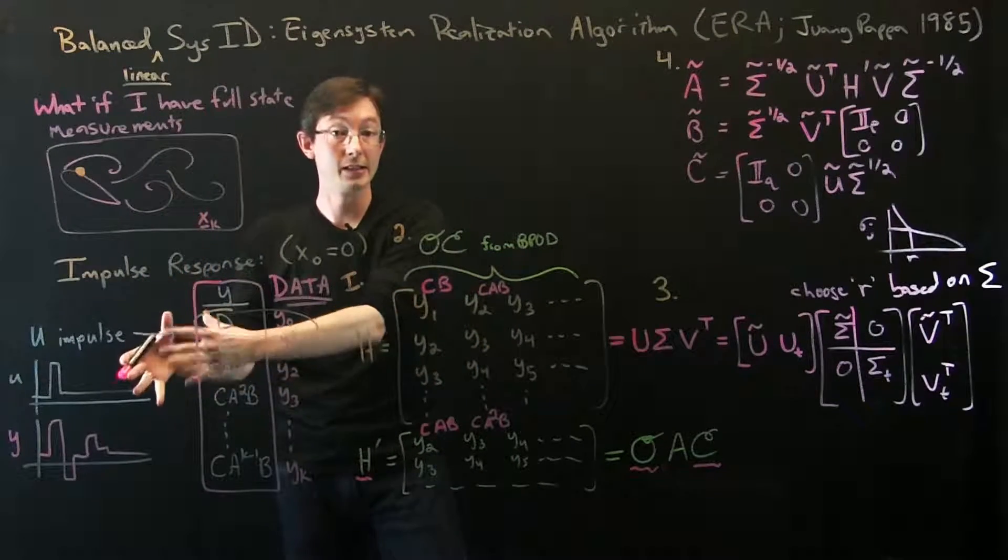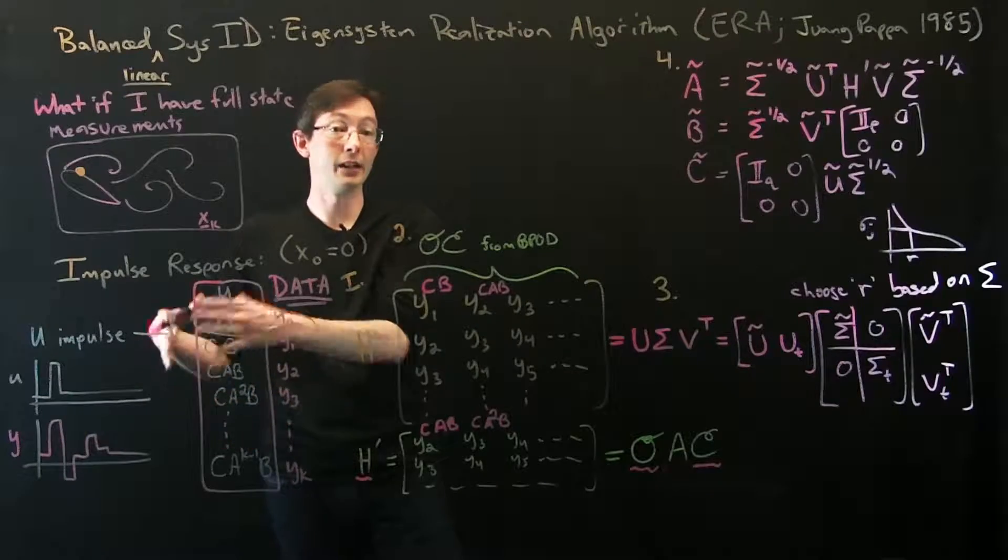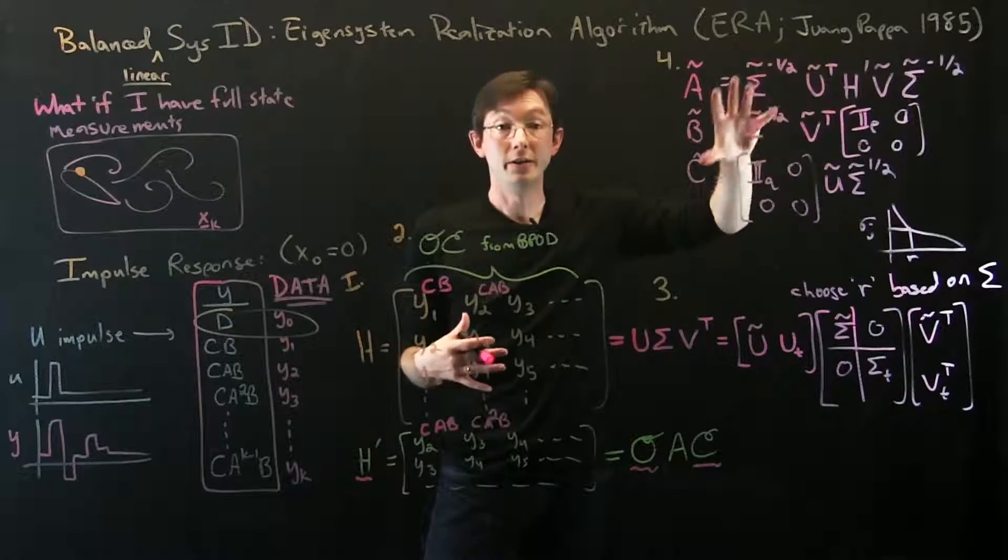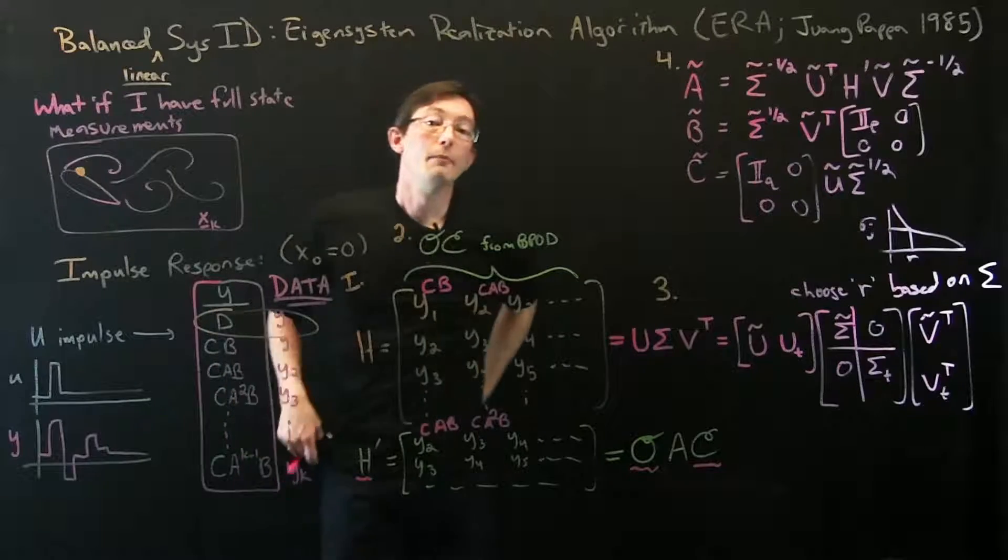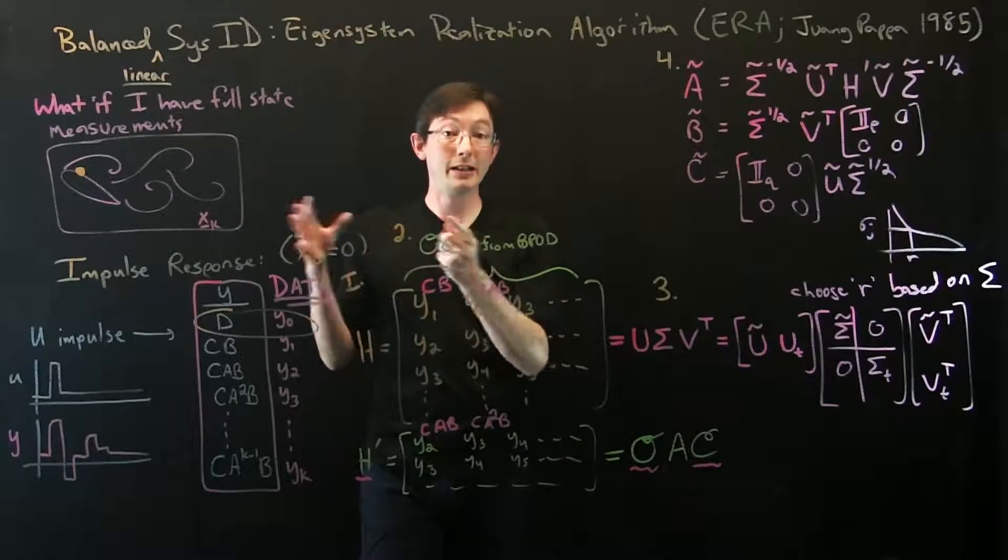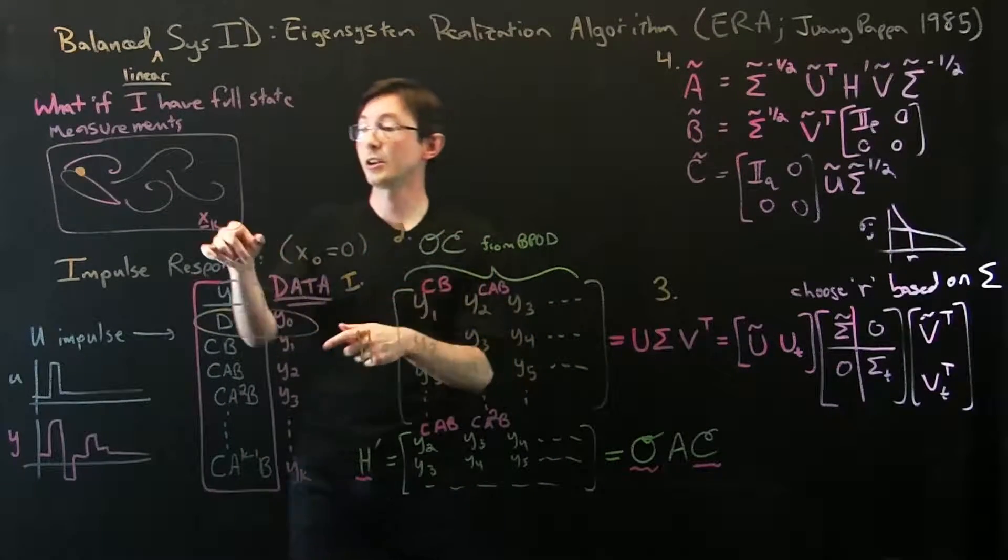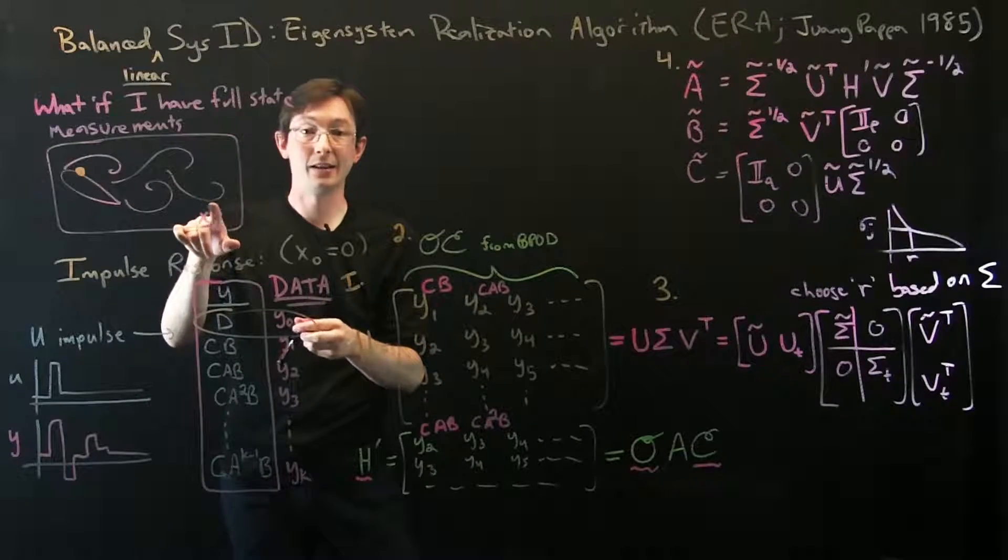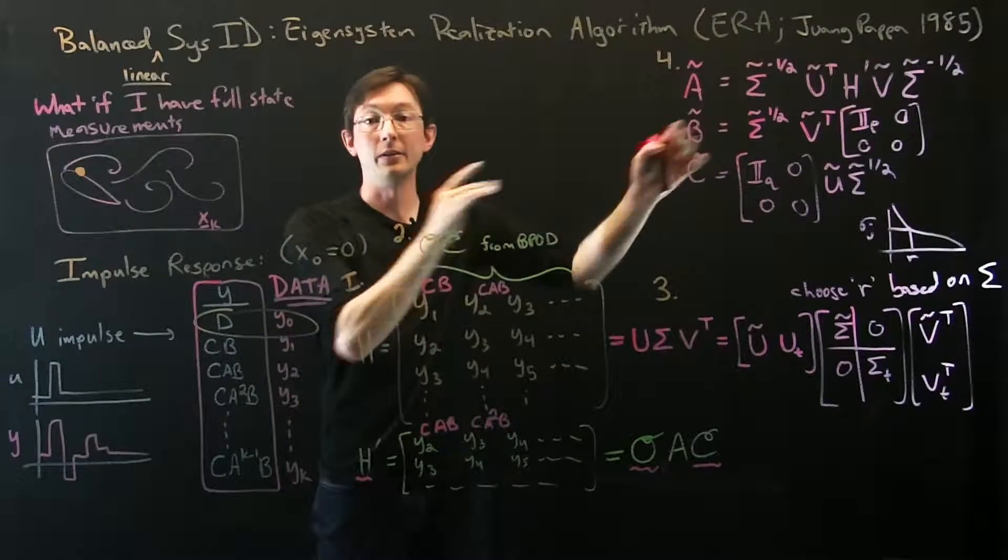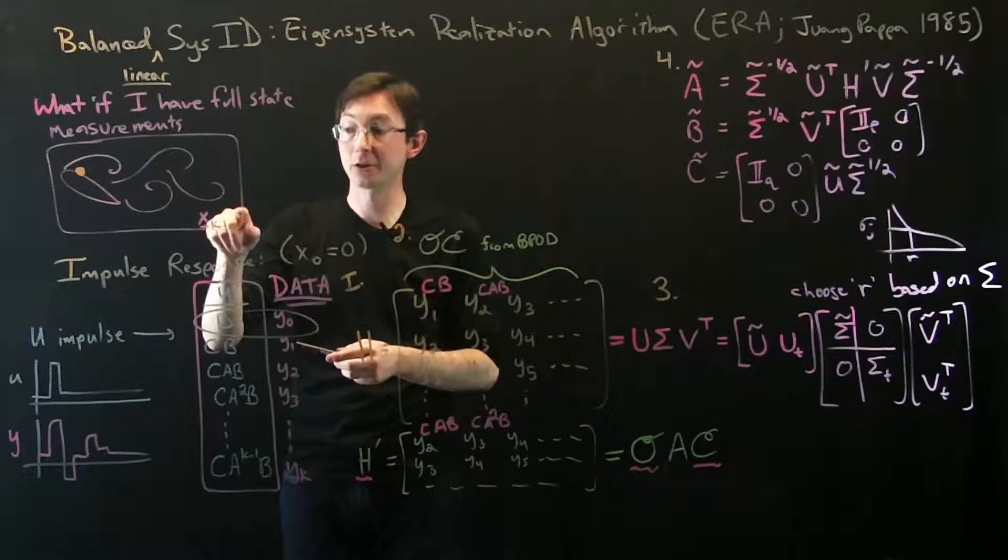So I still want Y to be that pressure measurement, I still want a reduced order model to do control on. So I'm going to build that model, but maybe when I was building this model I did this in a laboratory or in a simulation where I actually had access to X. So I'm going to use the model in the field where I only have Y, but in my laboratory I had access to X.